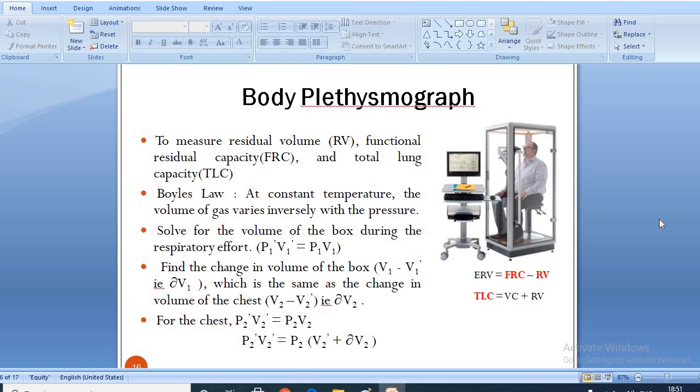First, the change in volume of the chest is computed. The initial pressure of the box times its volume is considered equal to the new pressure after expansion times the unknown new volume. Once the new volume is found, the original volume minus the new volume is the change in volume in the box and also the change in volume in the chest. With this information, Boyle's law is used again to determine the original volume of the gas in the chest. The initial volume times the initial pressure is equal to the final volume times the final pressure.